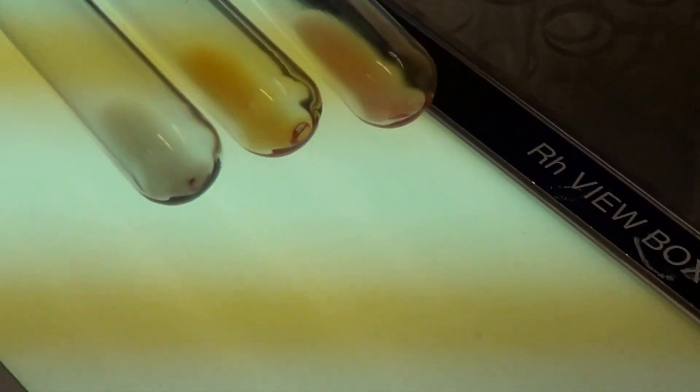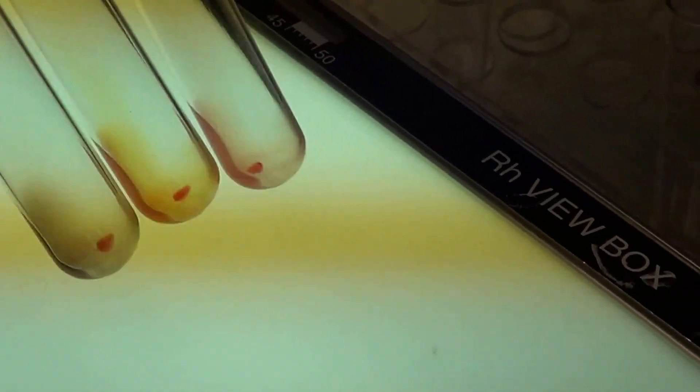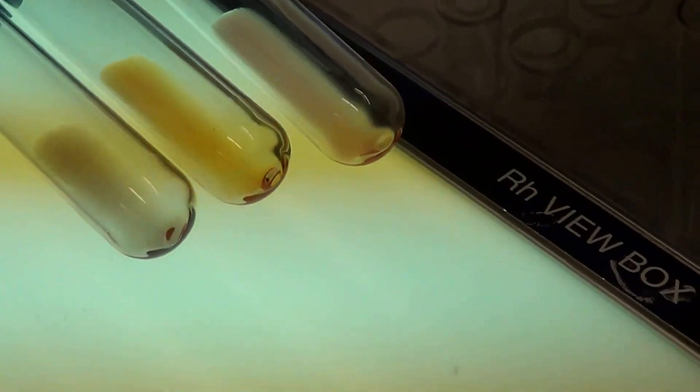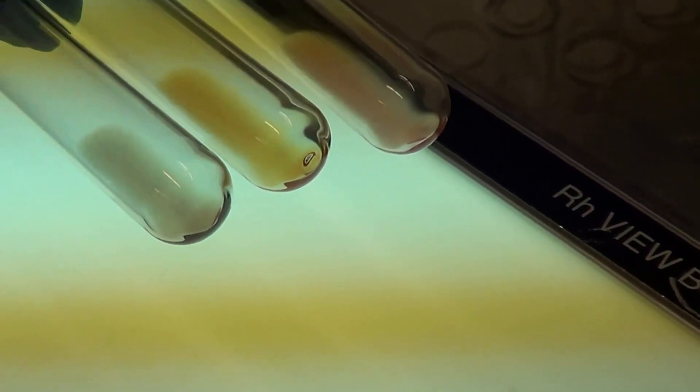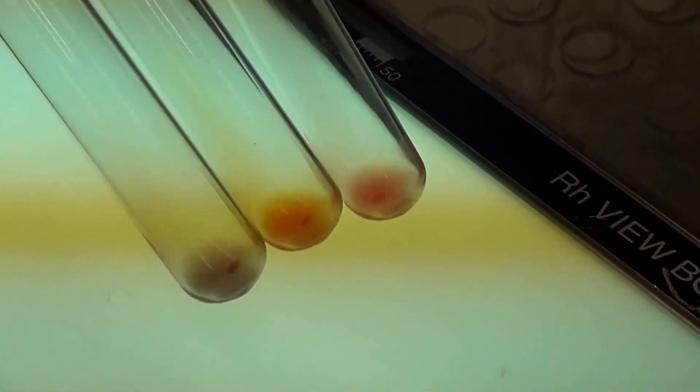There is no agglutination present in these test tubes, therefore they do not have the A antigen or the B antigen. This person would be type O.